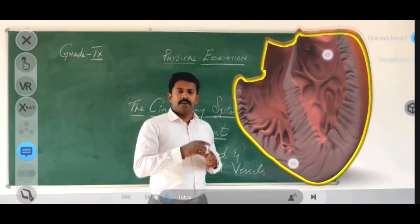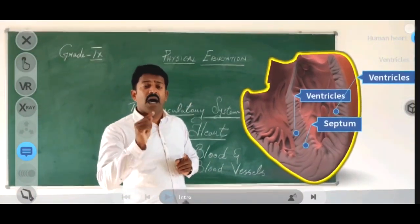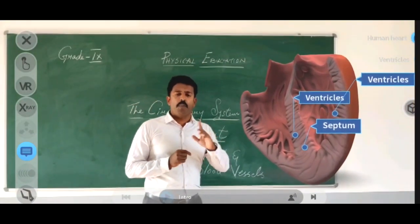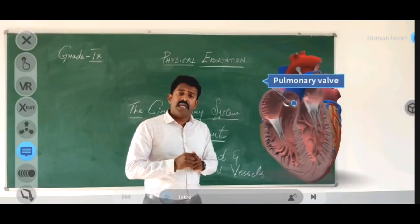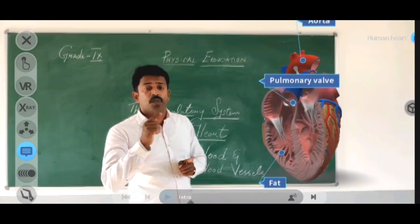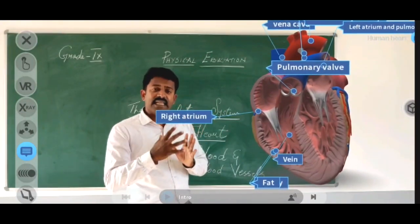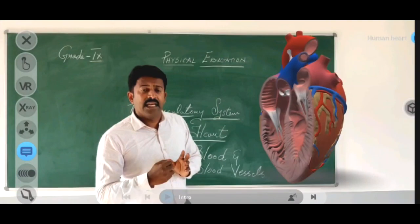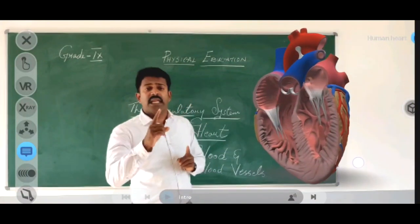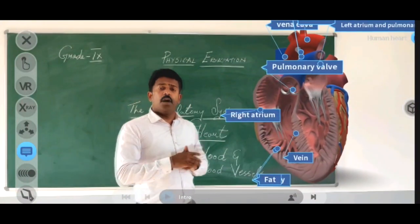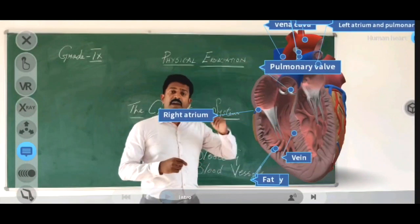From the right ventricle, with the help of the pulmonary artery — which is the only artery that carries impure blood — the impure blood is transported to the lungs. In the lungs, the blood gets oxygen, that is, the blood is oxygenated. Then, with the help of the pulmonary vein, it comes back to the heart. The pulmonary vein is the only vein that carries pure blood; in all other cases, veins carry impure blood.